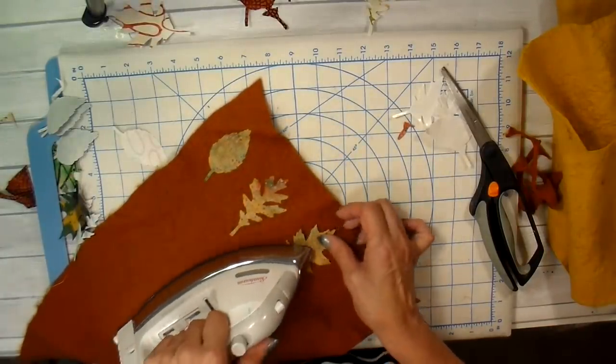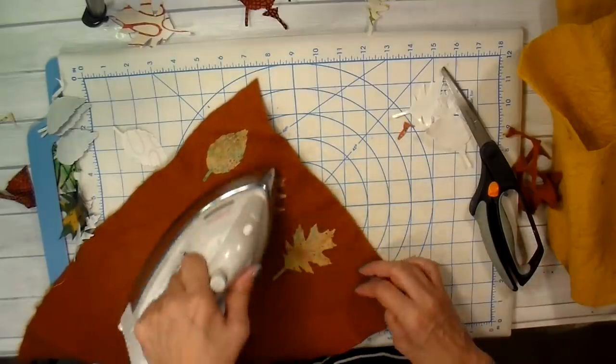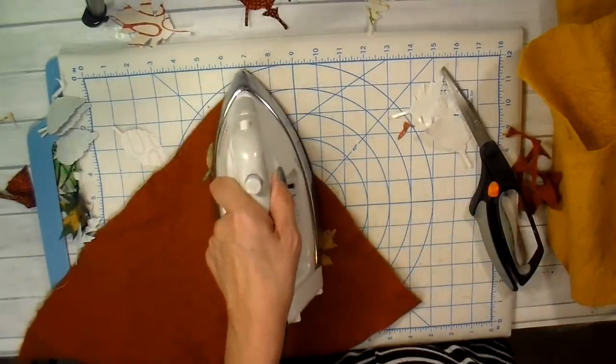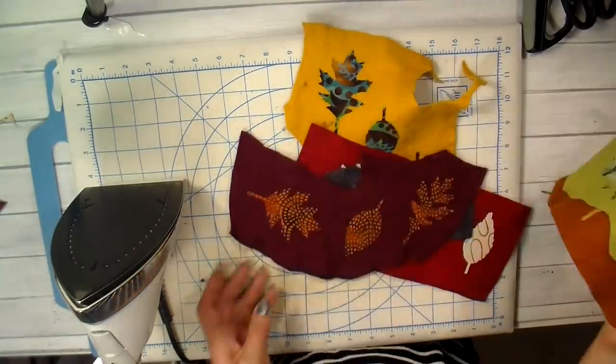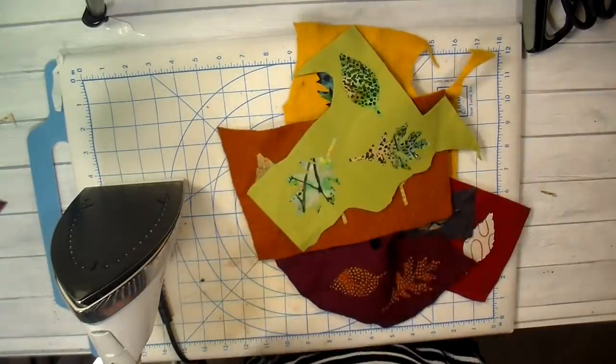Now notice I'm leaving some space in between these. I do want some of the felt showing and I'll show you more of that at my sewing machine. I have all of them now ironed onto my felt.